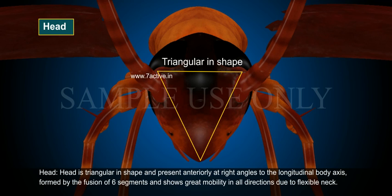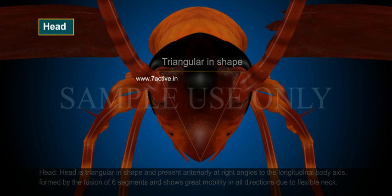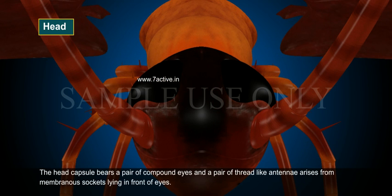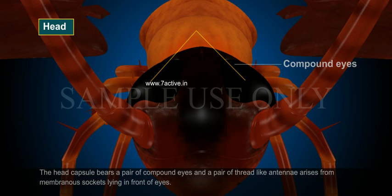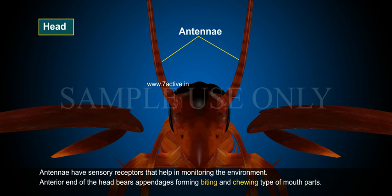Head. The head is triangular in shape and present anteriorly at right angles to the longitudinal body axis, formed by the fusion of six segments and shows great mobility in all directions due to the flexible neck. The head capsule bears a pair of compound eyes and a pair of thread-like antennae that arise from membranous sockets lying in front of the eyes. Antennae have sensory receptors that help in monitoring the environment.